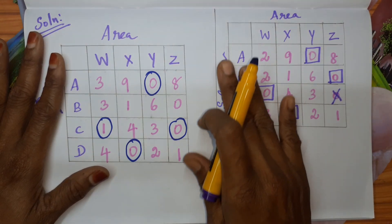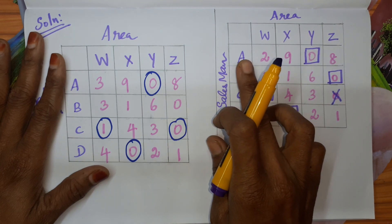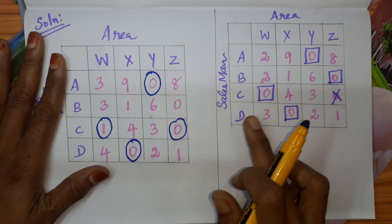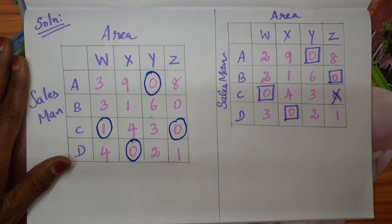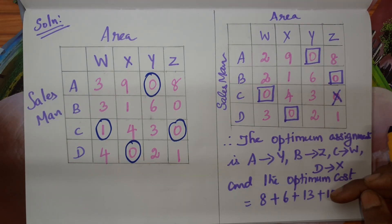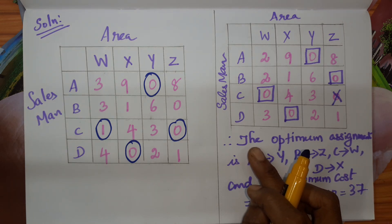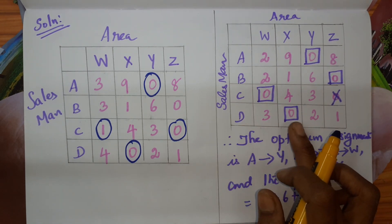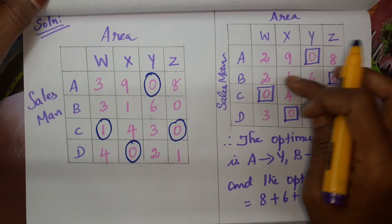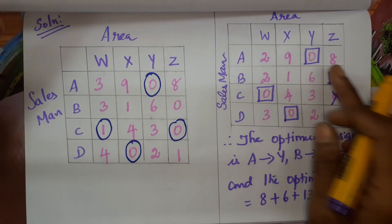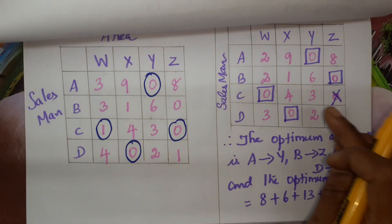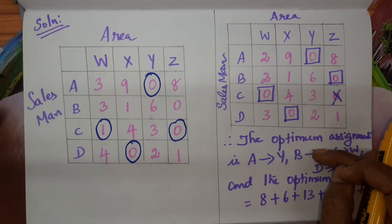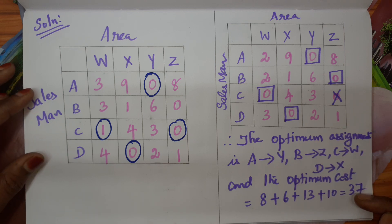We have assigned all salesmen to different areas: salesman A to area Y, B to area Z, C to area W, and D to area X. Now we write the final answer. The optimum assignment is A→Y, B→Z, C→W, D→X. The optimum cost is found by adding the corresponding values from the original cost matrix: A→Y is 8, B→Z is 6, C→W is 13, and D→X is 10. Adding all four values gives a total of 37. This is the optimum assignment and the minimum cost is 37.